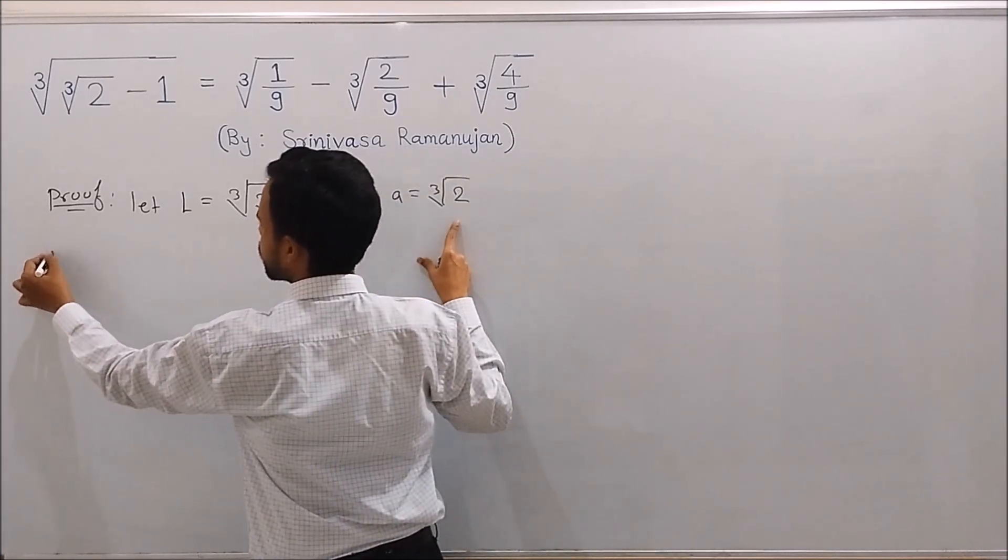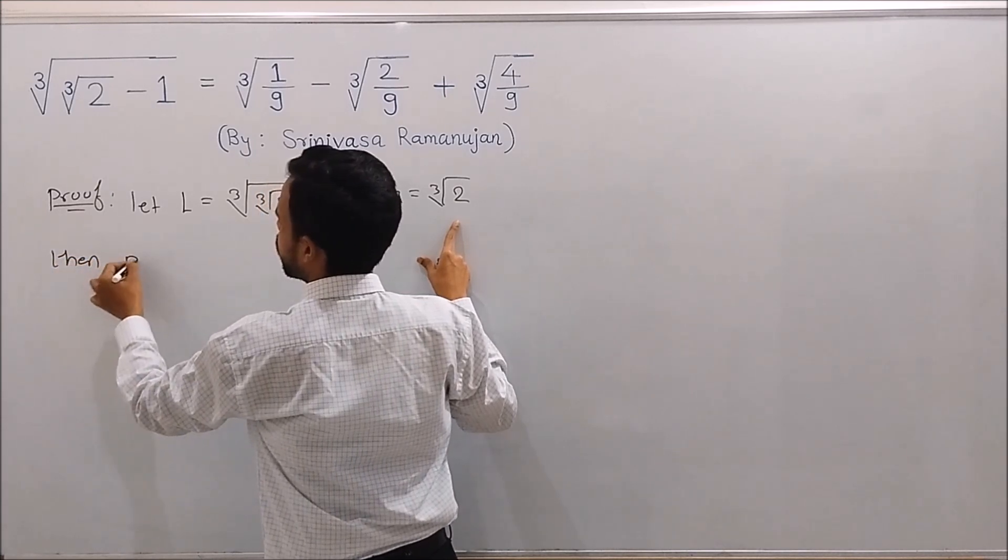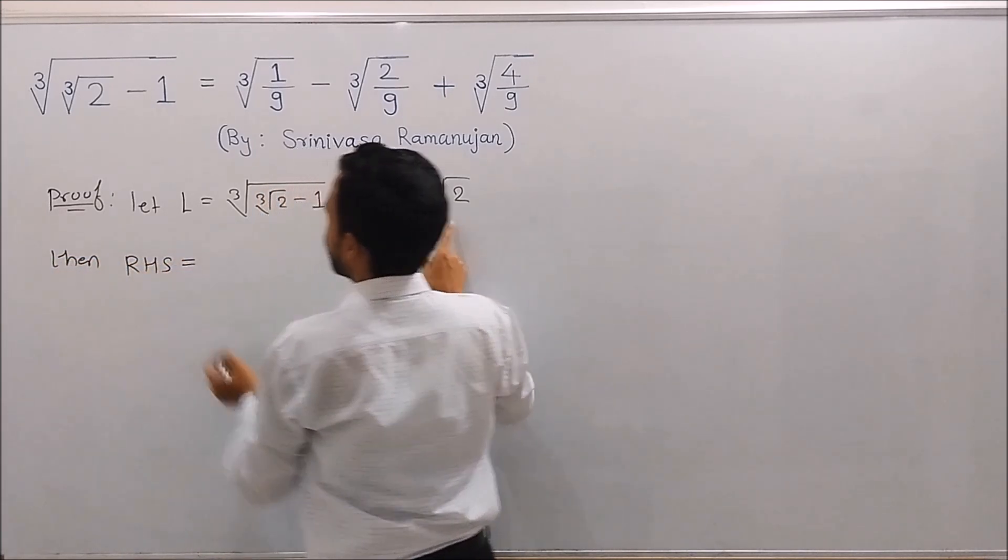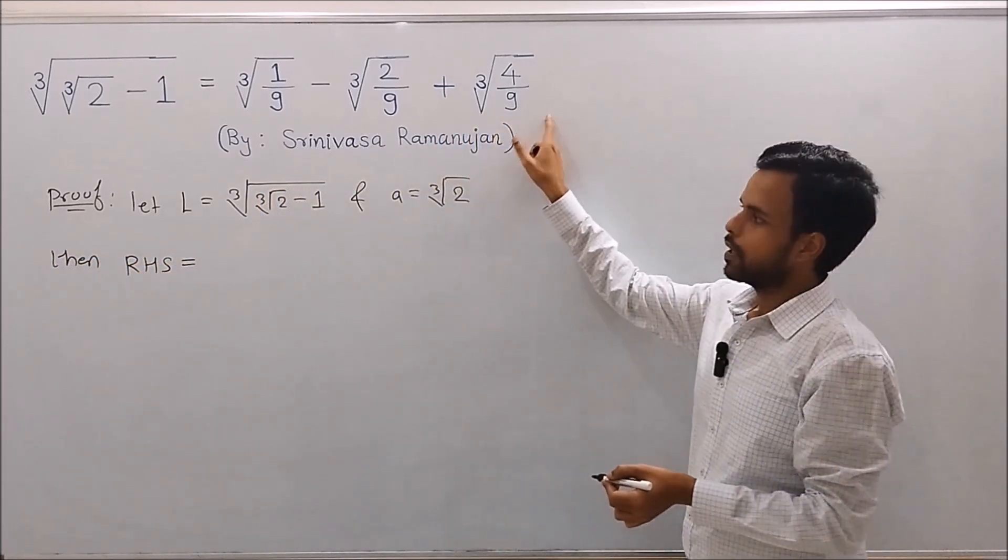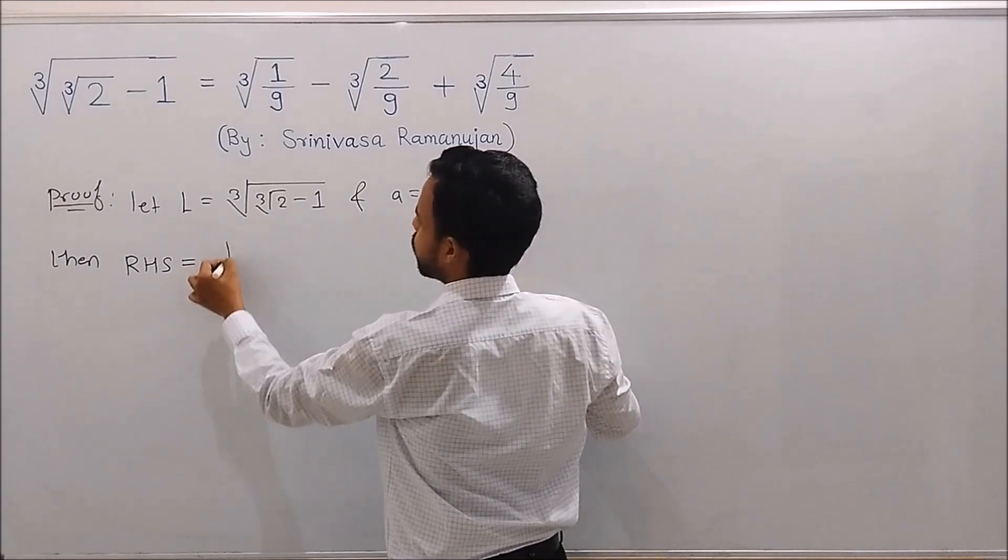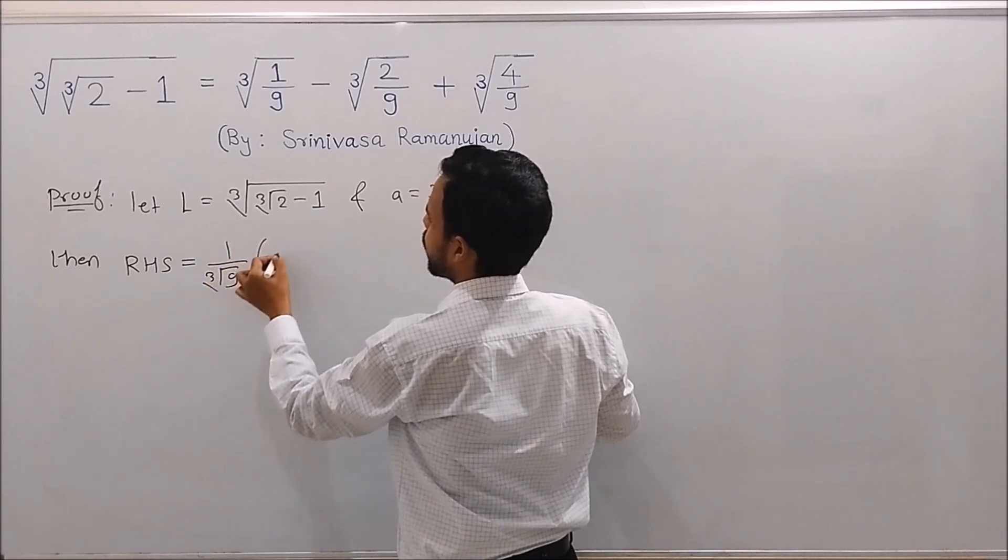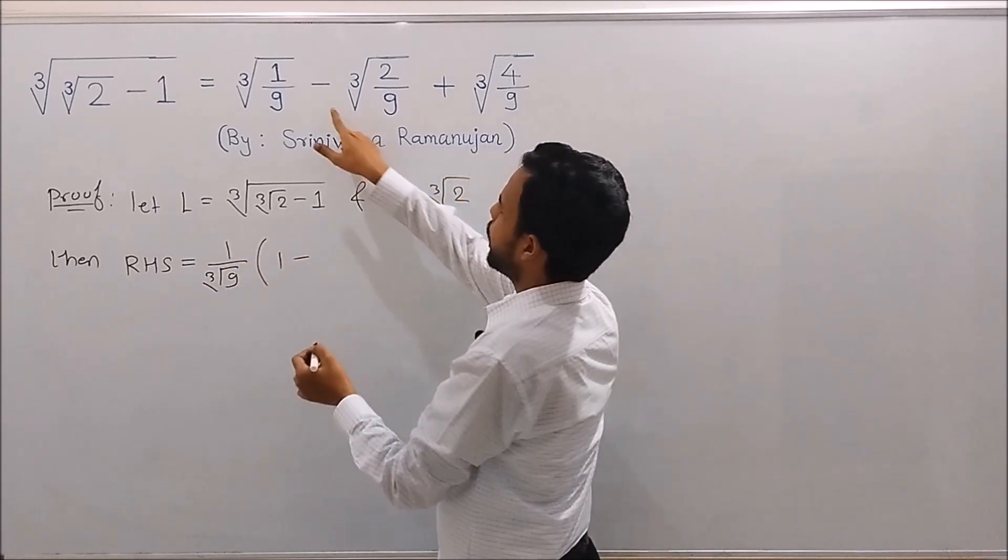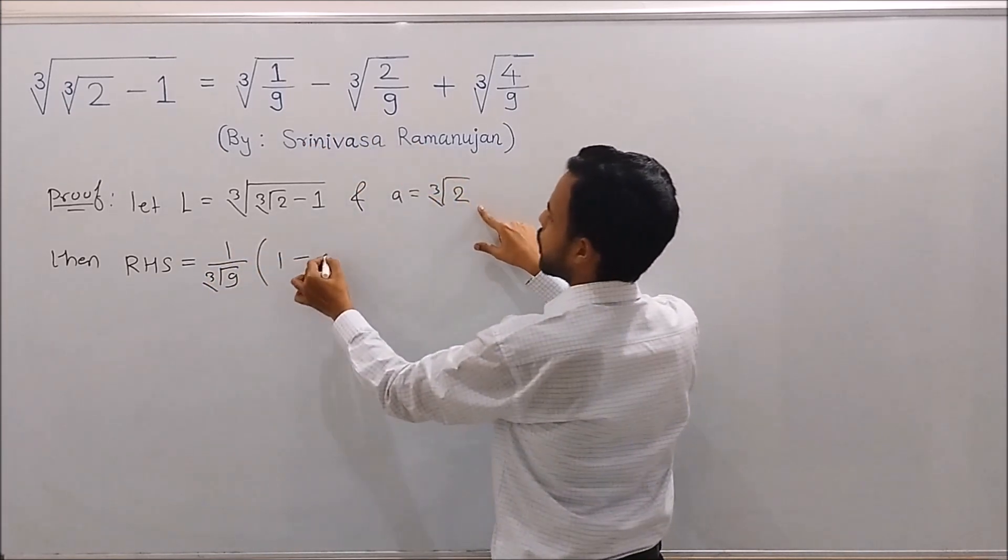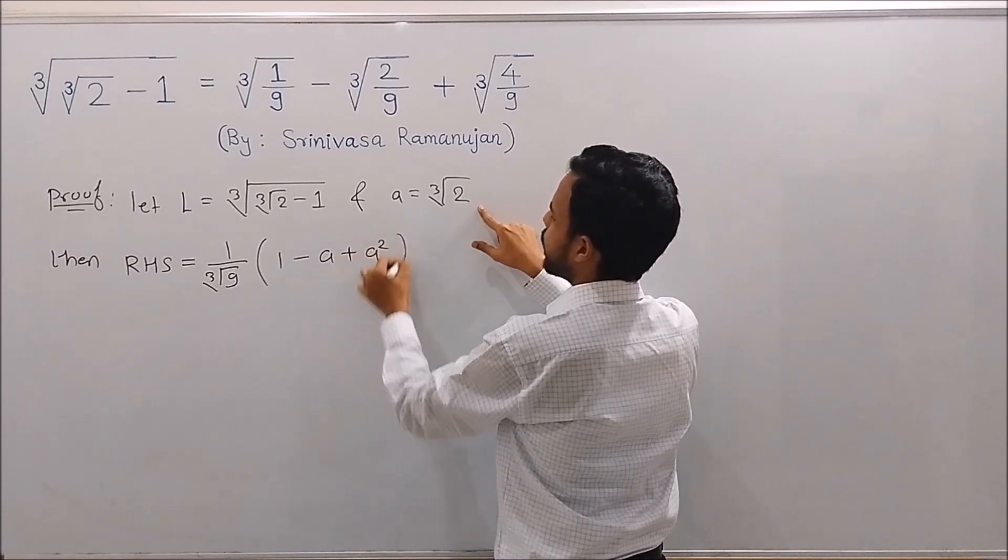Then the right-hand side of the above identity is 1 over cube root of 9 times (1 minus A plus A squared).